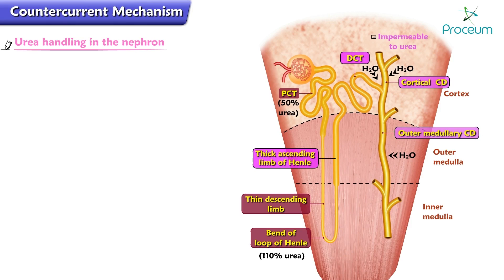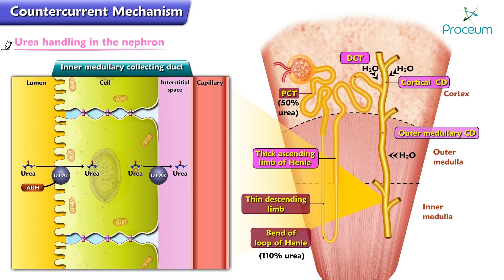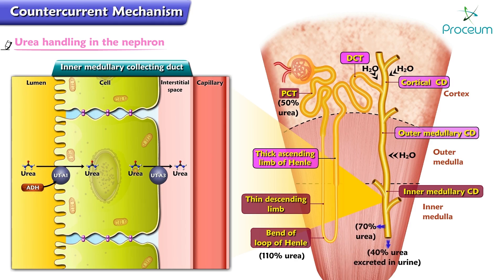Consequently, in those segments urea is left behind and the concentration of urea in the tubular fluid becomes quite high. In the inner medullary collecting ducts there is a specific transporter for facilitated diffusion of urea — urea transporter 1 (UT1) — activated by ADH. In the presence of ADH, urea is reabsorbed by UT1, moving down its concentration gradient from the lumen into the interstitial fluid of the inner medulla. Approximately 70% of the filtered urea is reabsorbed by UT1, leaving 40% of the filtered urea to be excreted in the urine. The urea reabsorbed in the inner medulla contributes to the corticopapillary osmotic gradient in a process called urea recycling.